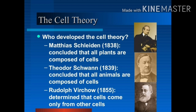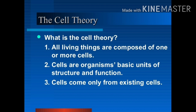After that, Schwann told us that all animals are also composed of cells. Then we came to Rudolf Virchow in 1855, who gave us a very important statement. He said 'Omnis Cellula E Cellula,' which means that all cells are formed from other existing cells — new cells are formed from pre-existing cells.